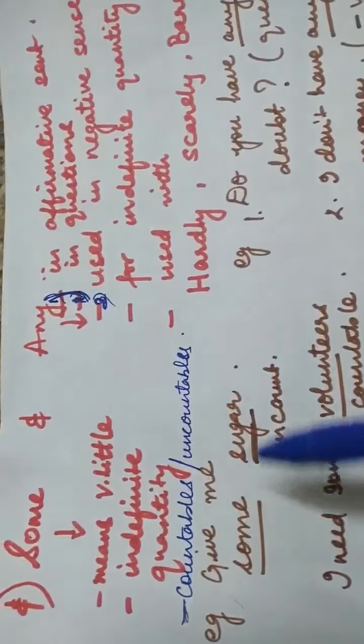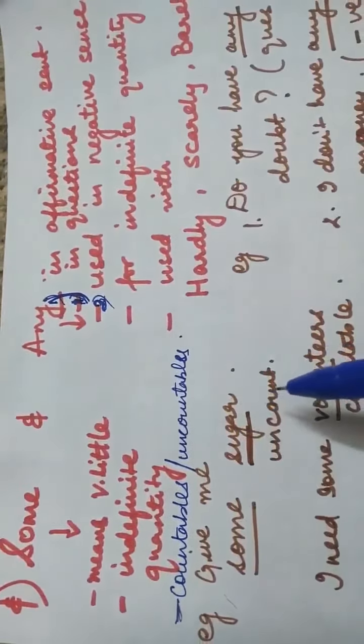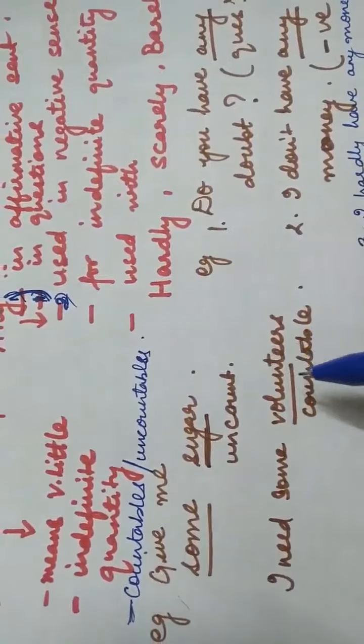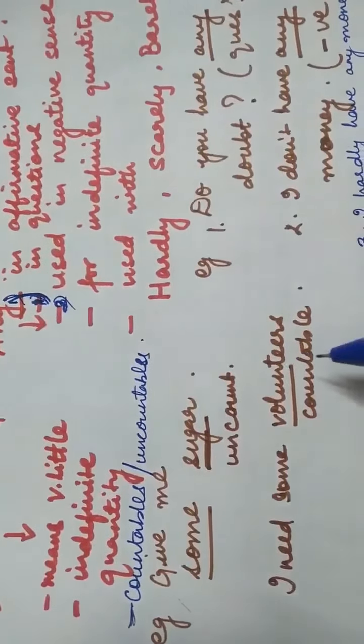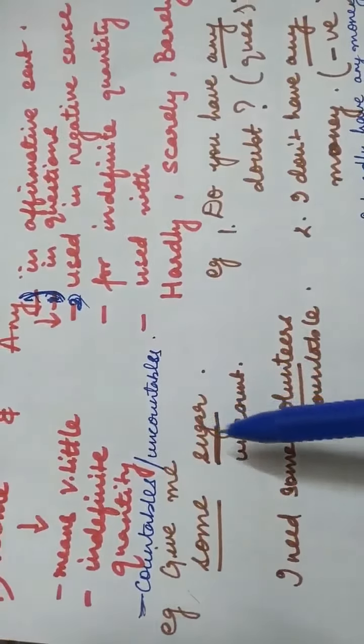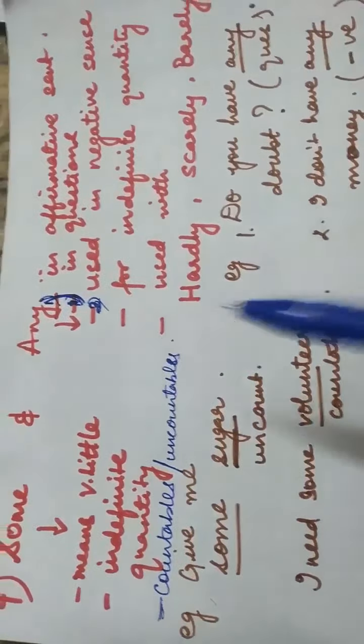For example, 'give me some sugar' — here sugar is an uncountable noun, and we are using 'some' with an uncountable noun. Another example: 'I need some volunteers' — but 'volunteers' is a countable noun. So 'some' is used with both uncountable nouns as well as countable nouns.